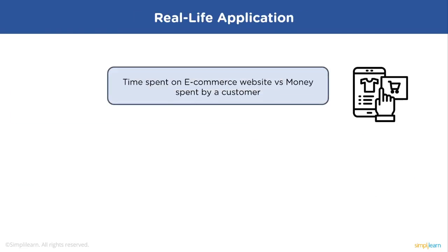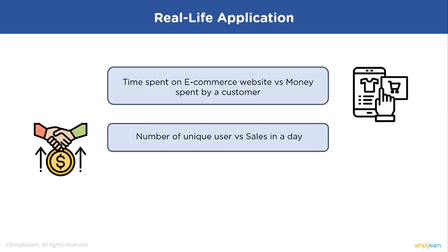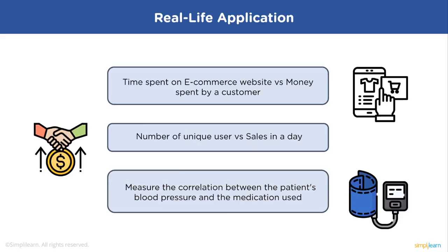Now let's see some real life applications of correlation. If you take any e-commerce company whose website is accessed by millions of users all over the world, the company can look at all the data and measure how much time was spent by the customer and the respective money spent by the customer. We can also predict the unique users that visited the website and how it affected the sales in a day. The third application can be patient blood pressure and the medication used. The level of patient blood pressure and the effect of medication on it can be in correlation.